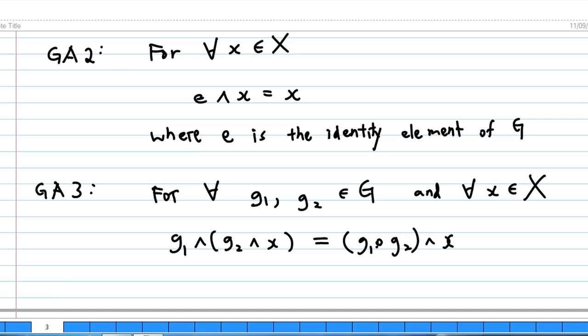GA3: For every element g1 and g2 in G and x in X, then g1 cap bracket g2 cap x is equal to the product of g1 and g2 cap x.